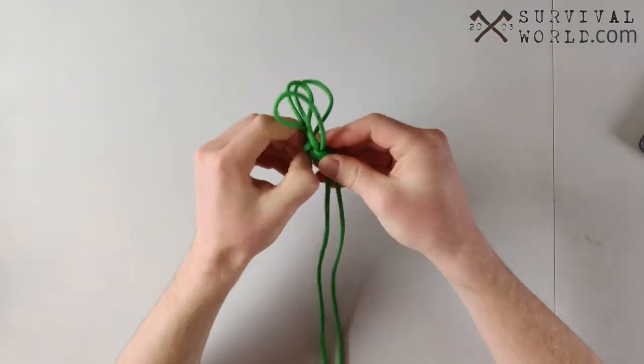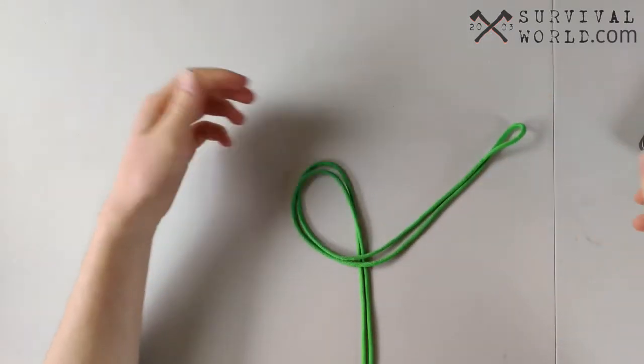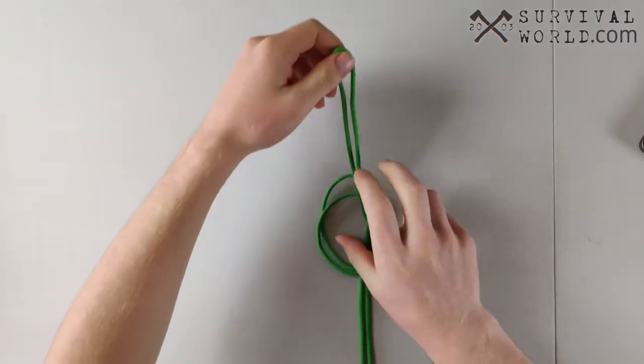I'll show you guys that a little bit quicker. So we're starting off with our doubled up line and we're going to create a nice overhand loop and insert our end up and through that overhand loop.